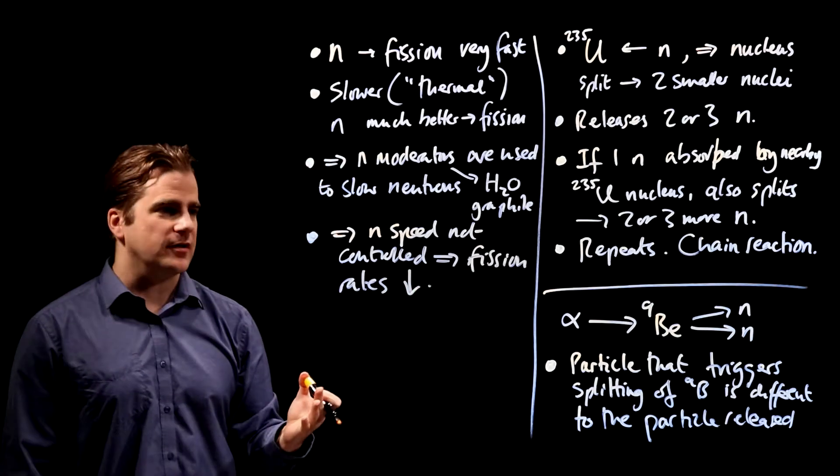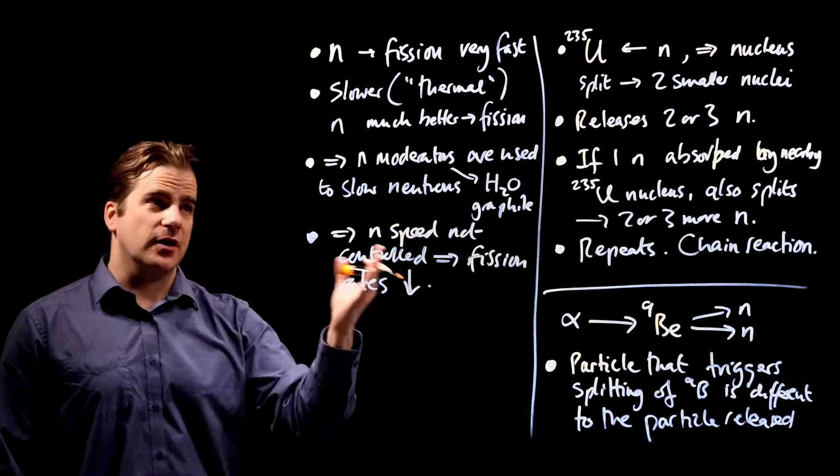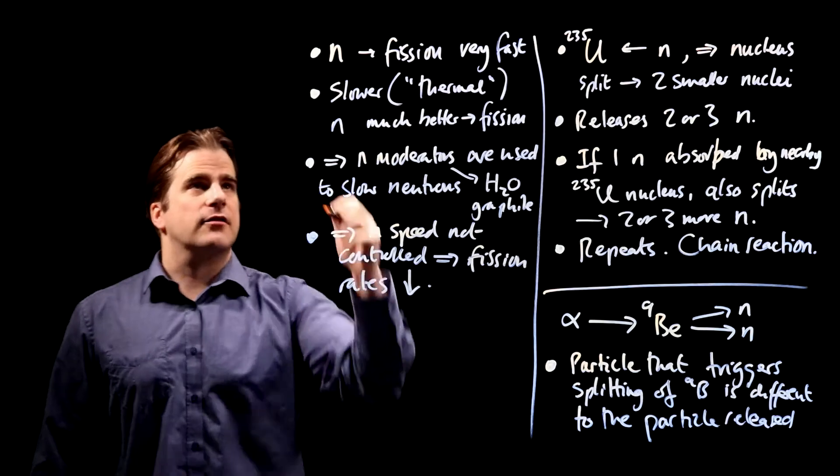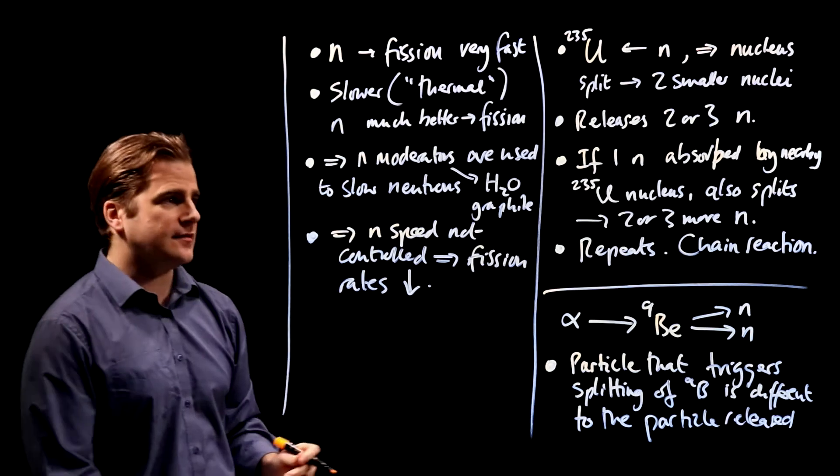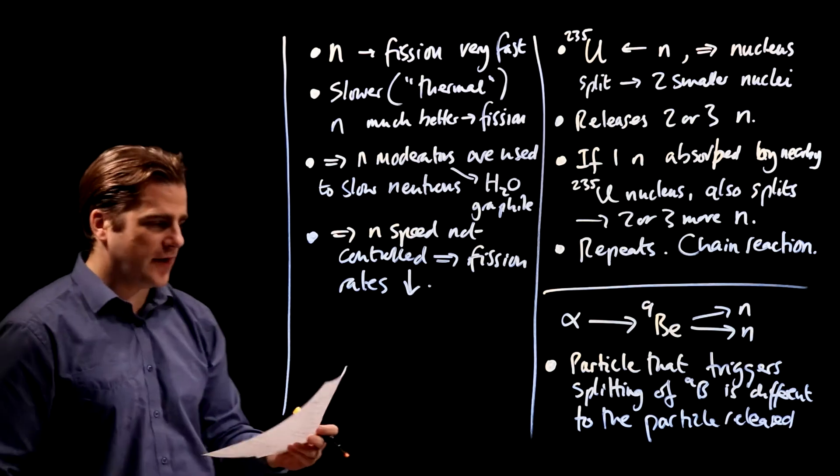Which, like I say, is counterintuitive. You'd think faster neutrons would cause fission, but it turns out you need these slow thermal neutrons. Good. Three marks in the bag. Let's move on. Final question.